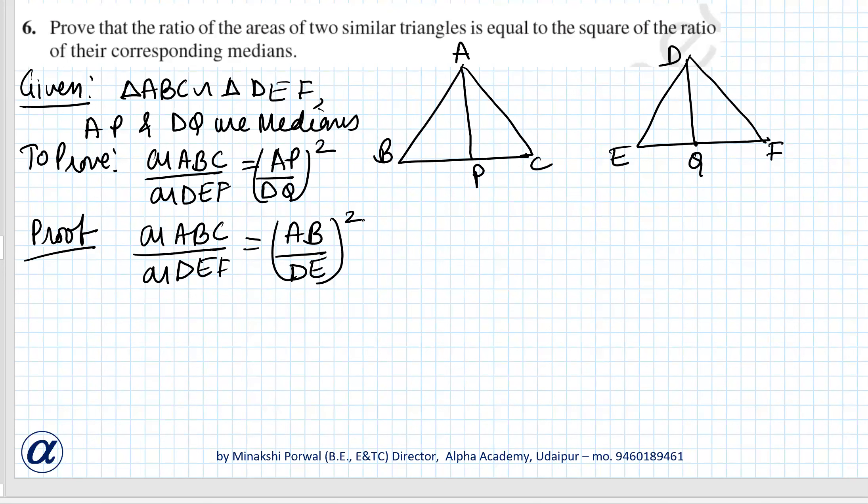If AP is a median, and it is given that AP and DQ are medians, that means the opposite side of AP, which is BC, is divided into two equal parts.